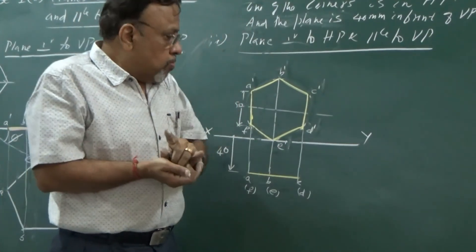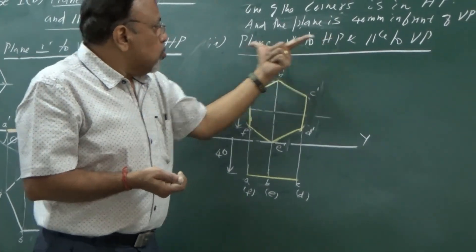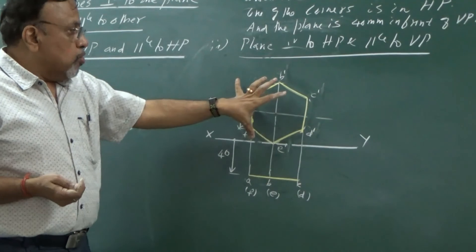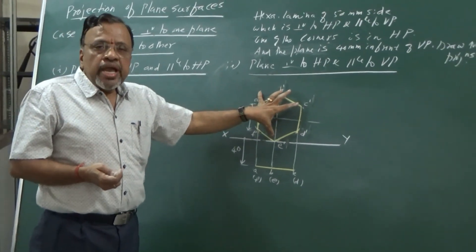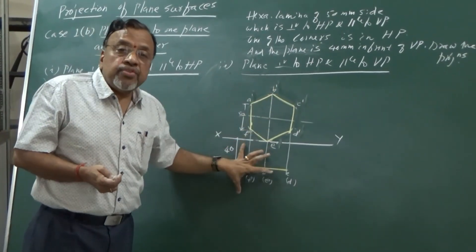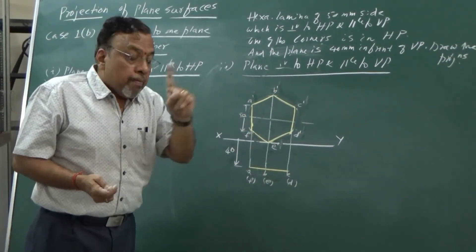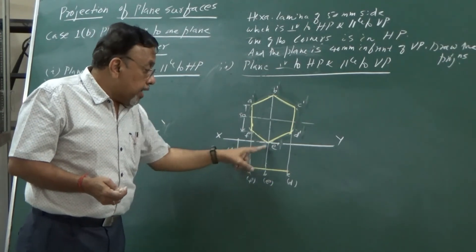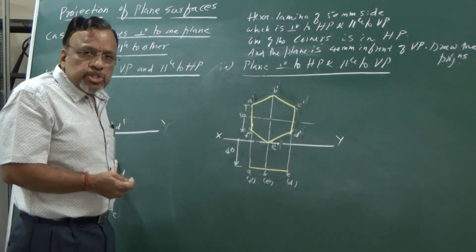Remember, whenever we have these particular two cases, in one of the views we can see the true shape, and in the other view it will be seen as a line, but that line has to be parallel to the XY line.